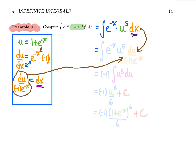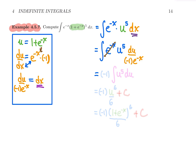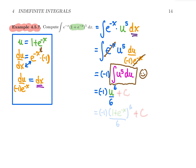Back to the integral: e to the minus x is waiting to be cancelled; we have u to the five, and dx blossoms into du over minus one times e to the minus x. The e to the minus x terms cancel perfectly. The one over minus one comes outside as minus one. Now we only integrate this clean power rule where n is five: keep the coefficient, u to the five becomes u to the six over six, plus c.